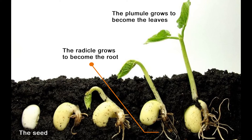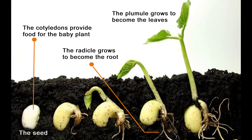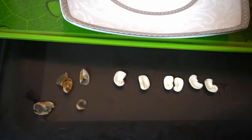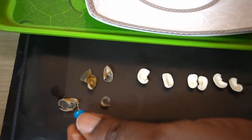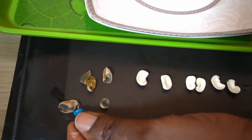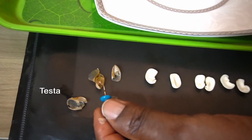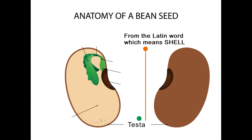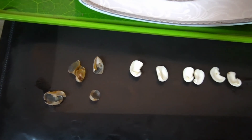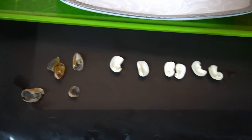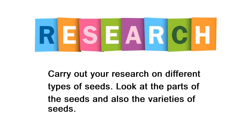The cotyledon will provide food for the baby plant. The cover around the seed that I've just removed is called the testa. Testa is from the Latin word meaning shell. Now go out and carry out your own research on different types of seeds — look at the parts of the seeds and also look at the varieties of seeds.